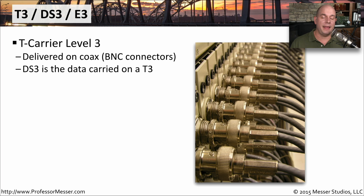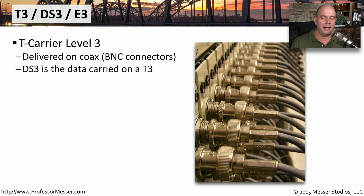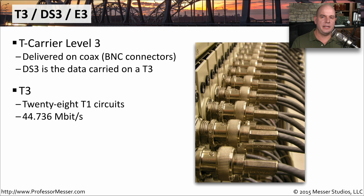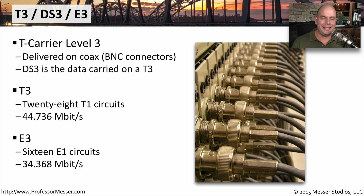The upgrade to the T1 and E1 are the T3 and E3. A T3 stands for T Carrier Level 3. It's usually brought into your facility over coax, so you still have a copper connection, and there are usually BNC connectors on the coax provided by the leasing carrier. If you hear someone referring to a DS3 connection, that's really referring to the data riding on a T3, but we tend to use those terms interchangeably. A T3 combines 28 separate T1 circuits into a single T3 link, giving you a total bandwidth of 44.736 megabits per second. An E3 combines 16 E1 circuits into a single piece of coax, giving you a total bandwidth of 34.368 megabits per second.